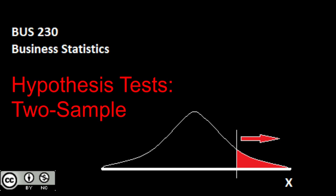We have two different scenarios. First, where our presumed standard deviations are known — we believe we know that true population standard deviation. On the other hand, we'll have the case when we presume those population standard deviations are unknown, which, to be honest, is typically the case. We're then going to carry forward and do the same thing with proportions — for example, 10% of voters in one area supported a politician versus 15% in another. Is that actually different, or is that just sampling difference between the two?